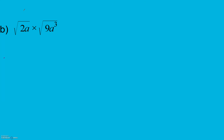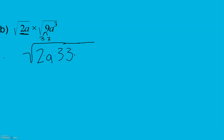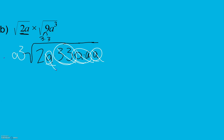Same idea in part b. There's nothing outside the radicals, so those are just 1s. Inside my first radical I have a 2 and an a. Inside my second I have a 9 (which is 3 times 3) and a cubed (which is three a's). Looking for pairs: a pair of 3s comes out, a pair of a's comes out, and another pair of a's. So outside I have 3, and a times a is a squared. Inside, all I have left is a 2. The result is 3a² times the square root of 2.